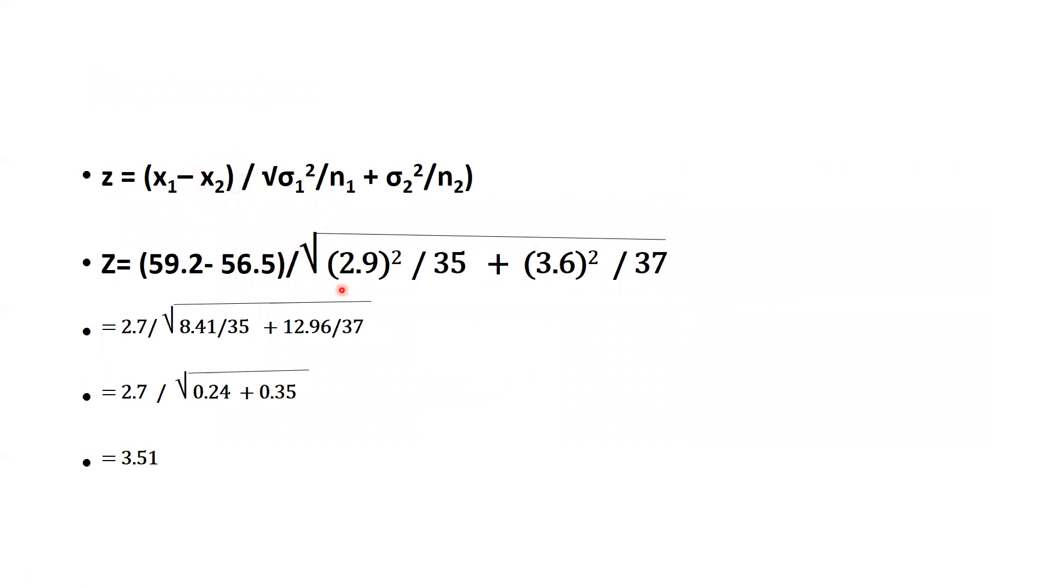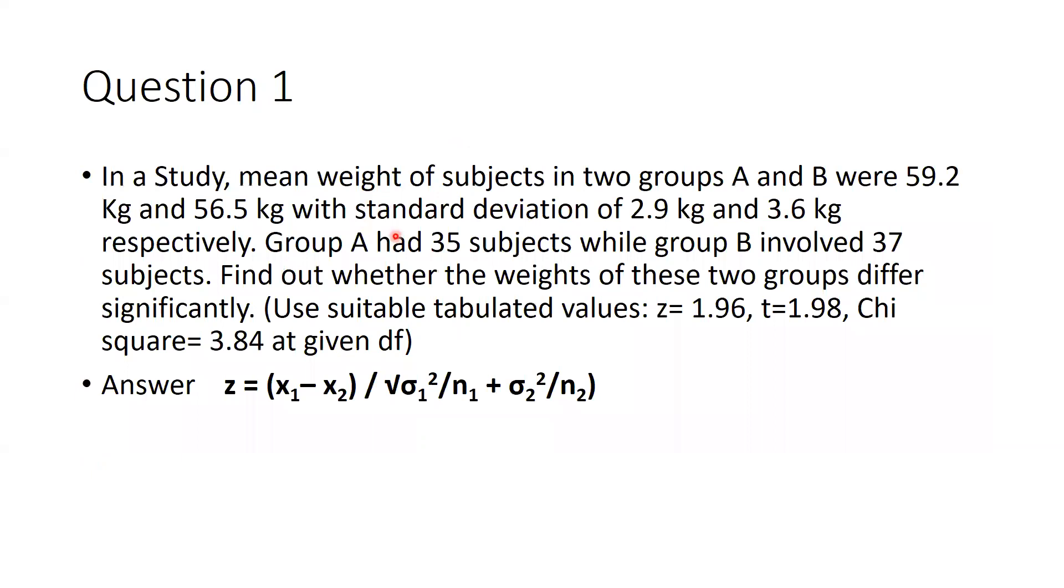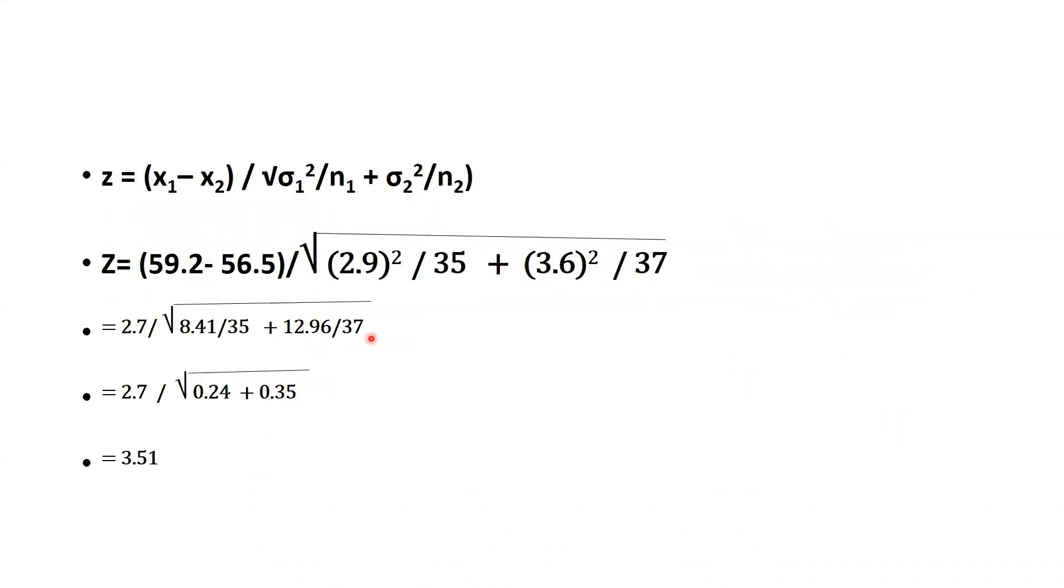After this, divided by under root sign, standard deviation of sample 1. You can see group A, that is standard deviation is 2.9. But standard deviation for sample, for group B, 3.6 kg respectively. We have put the same values: 2.9 whole square divided by 35 plus 3.6 whole square divided by 37.